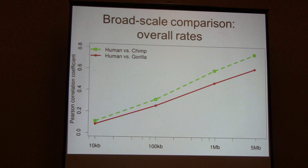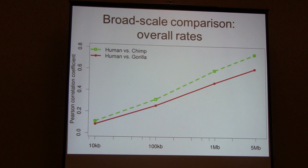Looking at recombination binned at different scale sizes — from 10 kb to 5 megabases — and comparing to the human versus chimp comparison from the PanMap paper, we find that gorilla versus human has a very similar pattern, very close to the human versus chimp line. This increasing correlation with increasing bin size holds for gorillas as well.